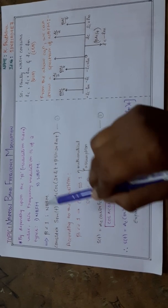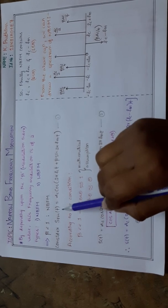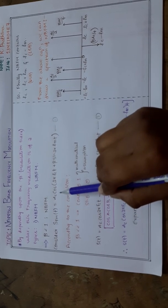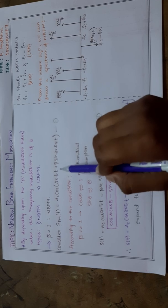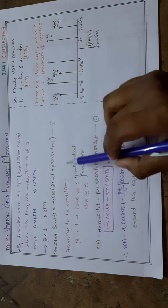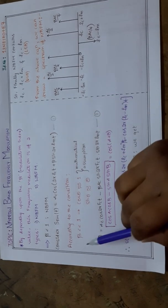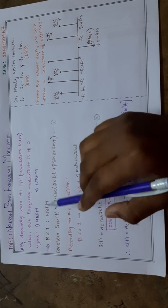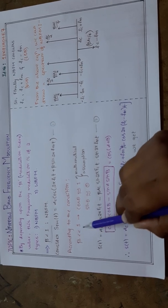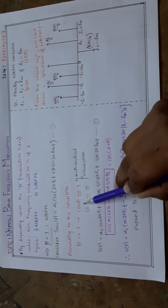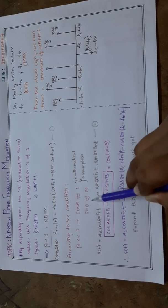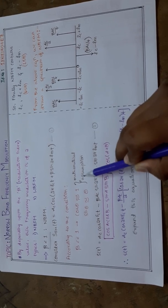Now let us consider the generalized equation of frequency modulation: S_FM(t) = A_C cos(2π f_C t + β sin(2π f_M t)). Consider this as equation 1. According to the condition β < 1, when beta is very less than 1, we consider cos θ ≈ 1 and sin θ ≈ θ. These two conditions are called mathematical assumptions.